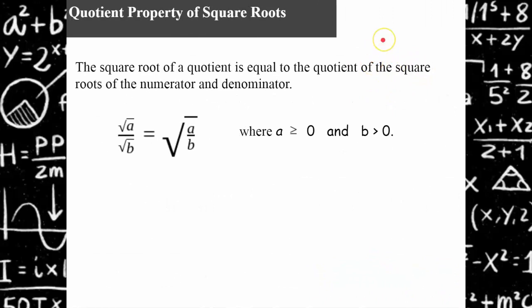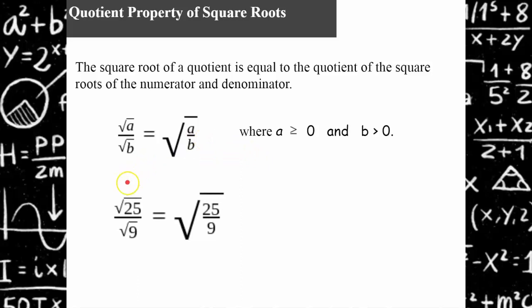So this leads us to the quotient property of square roots. The square root of a quotient is equal to the quotient of the square roots of the numerator and the denominator. So here we have the square root of A divided by the square root of B is equivalent to the square root of A over B. Noting that A can be greater than or equal to zero — it cannot be negative for square root — but the denominator must be greater than zero. You cannot divide by zero. So neither the numerator nor denominator can be negative.